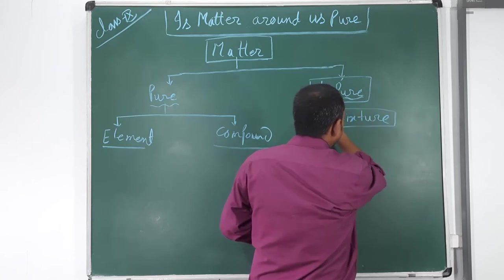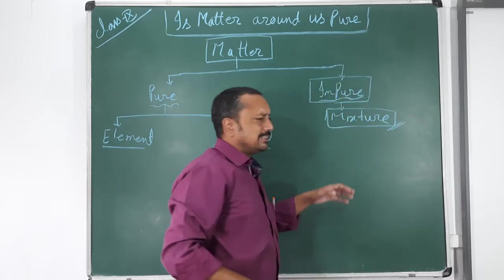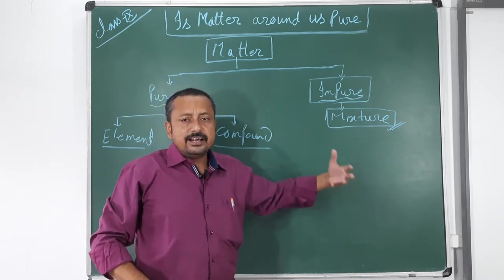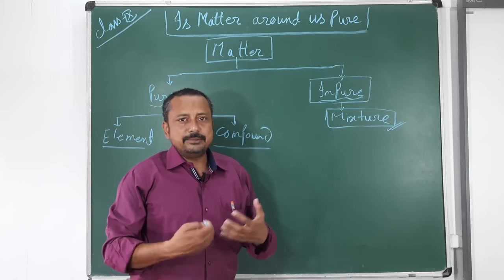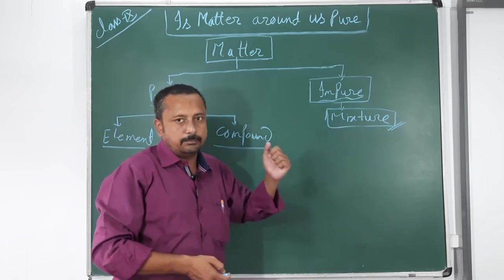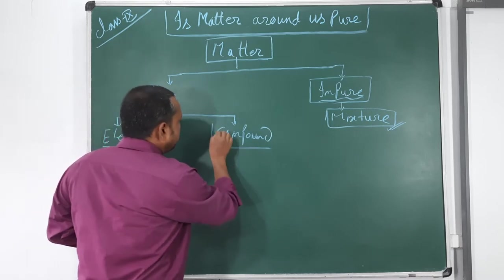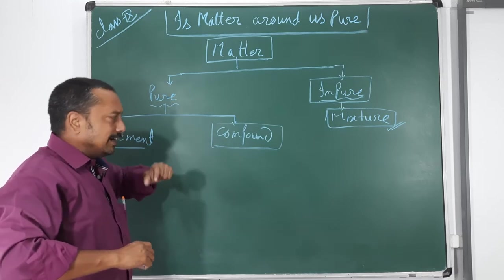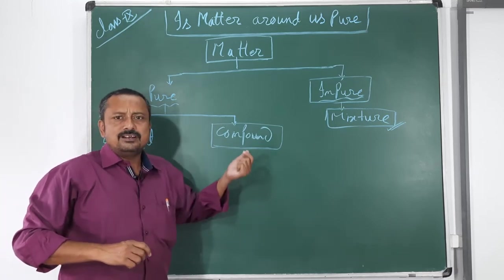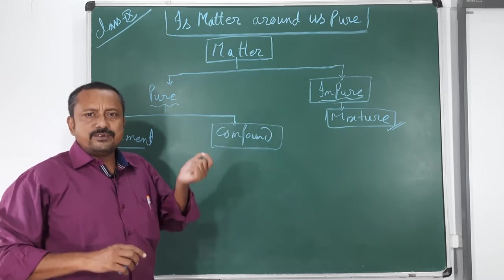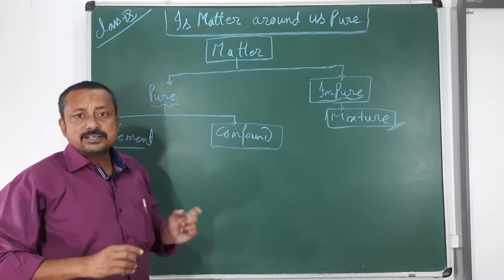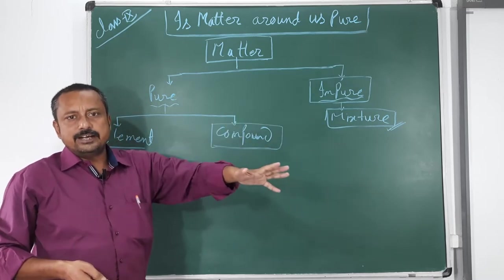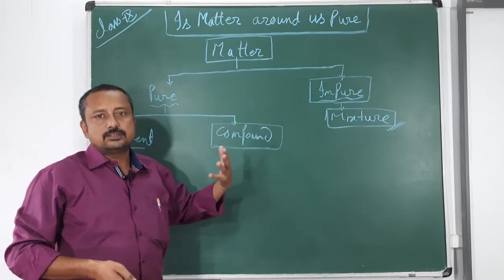Impure materials are those substances formed by mixing two or more substances in any ratio, where the formed material is not completely different from its parent substances. Such materials are termed as impure materials — basically a mixture, because a mixture consists of more than one type of particle. Compounds, however, are formed by mixing particles in a simple whole number fixed ratio; changing that ratio changes the nature of the substance.